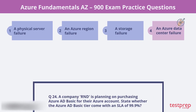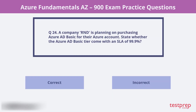Question 24. A company R&D is planning on purchasing Azure AD Basic for their Azure account. State whether the Azure AD Basic tier comes with an SLA of 99.9%. Yes, it does.